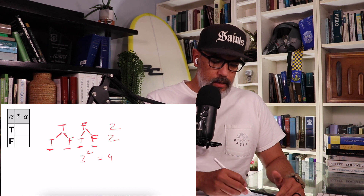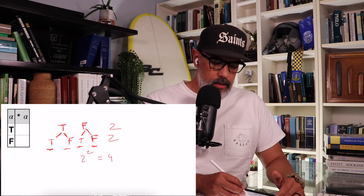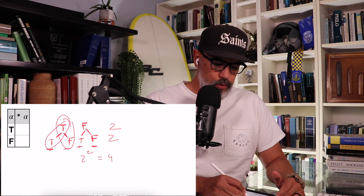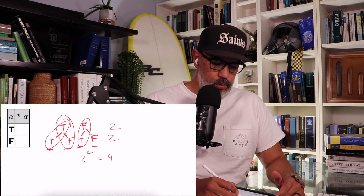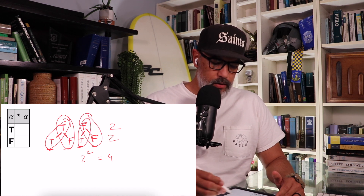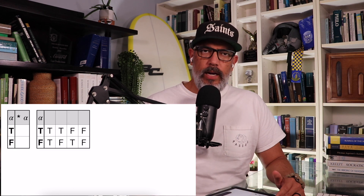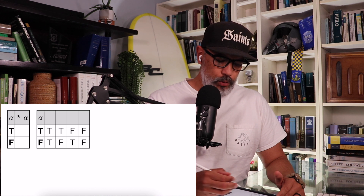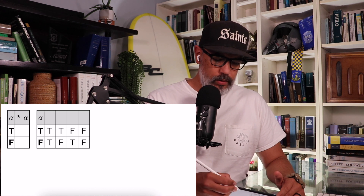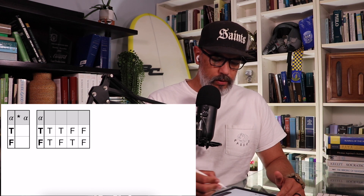And here's what it looks like: true-true, true-false, false-true, false-false. Those are our different possible combinations. Writing those neatly into a little table: true-true, true-false, false-true, false-false.